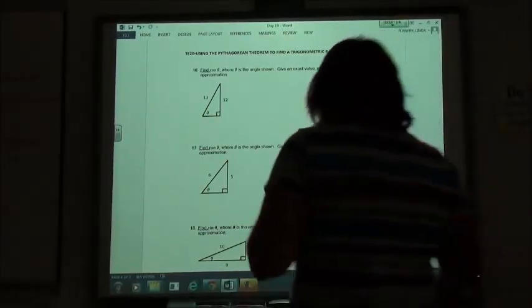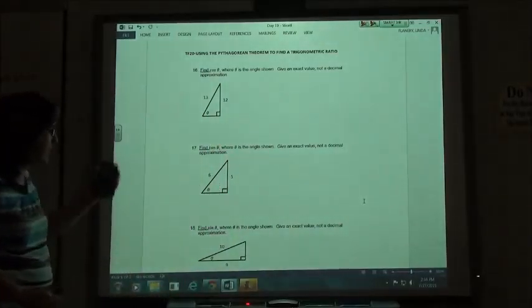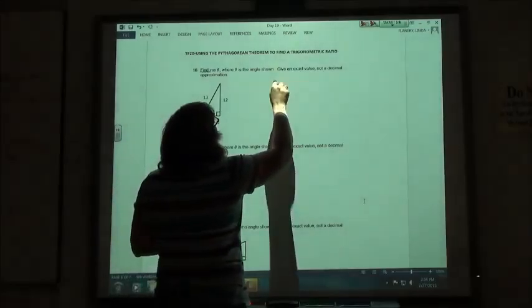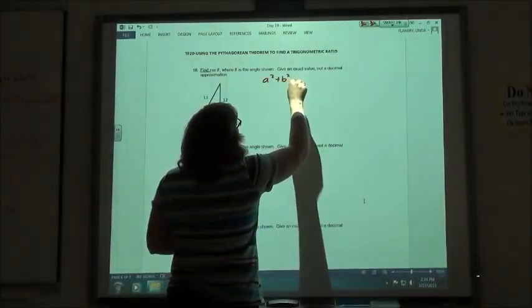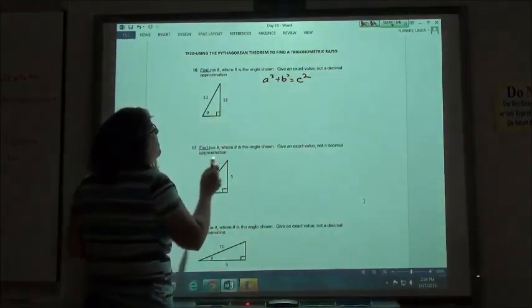The next one, we're going to use the Pythagorean Theorem to find our missing side so that we can find cosine, tangent, sine, whatever they might ask for. So Pythagorean Theorem says that A squared plus B squared equals C squared. So the two legs equals the hypotenuse.